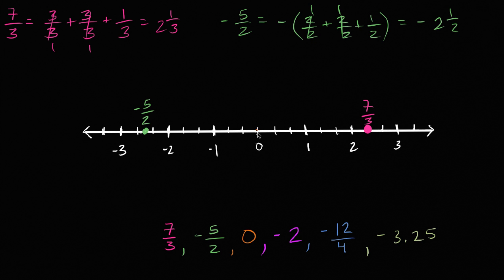Then we have 0, not too difficult. It's actually labeled on our number line for us. Then we have negative 2. Negative 2, once again, on our number line for us. Two steps, two whole numbers to the left of 0. So negative 2 is going to put us right over there.